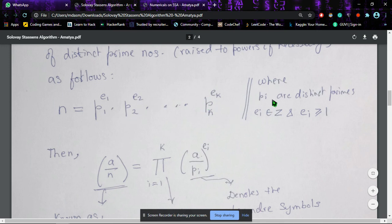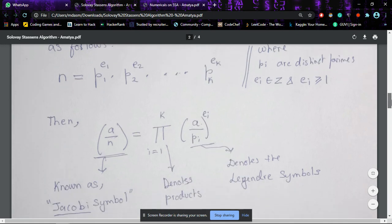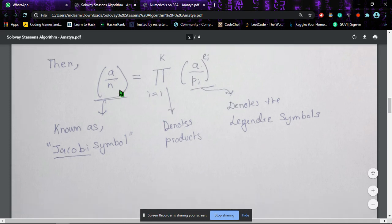Like p_1 raised to e_1, p_2 raised to e_2, and so on, where p_i (i ranges from 1 to k) are distinct primes, and e_i belongs to Z—Z denotes integers—and e_i is greater than or equal to 1.